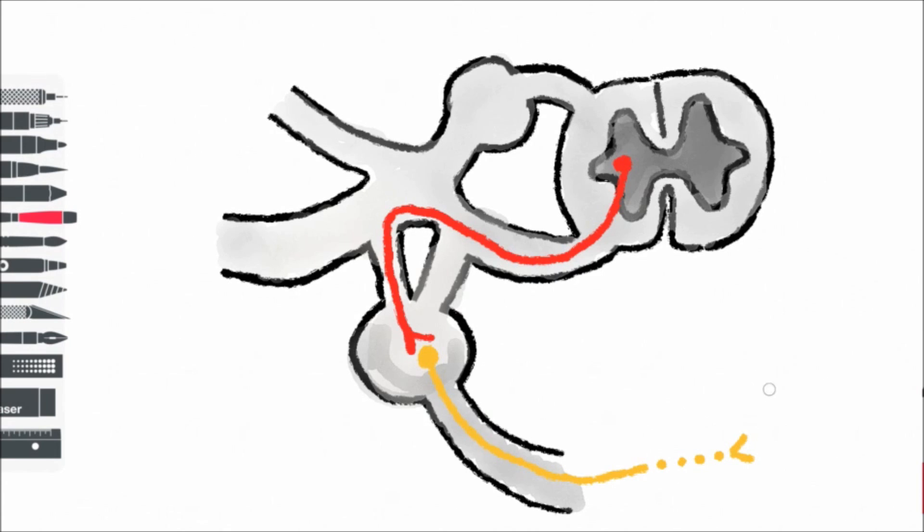Some splanchnic nerves leave the sympathetic chain as postganglionic fibers. For example the cardiopulmonary splanchnic nerves that supply the heart and the lungs, these are postganglionic. These nerves are fully classified as postganglionic sympathetic splanchnic nerves.